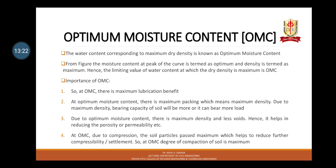At OMC there is maximum lubrication benefit. At optimum moisture content, there is maximum packing which means maximum density. Due to maximum density, bearing capacity of soil will be more — it can bear more load. Due to optimum moisture content, there is maximum density and less voids, hence it helps in reducing porosity and permeability. At OMC, due to compression, soil particles are packed maximally, which helps reduce further compressibility or settlement. So at OMC, degree of compaction of soil is maximum.